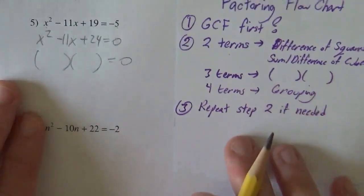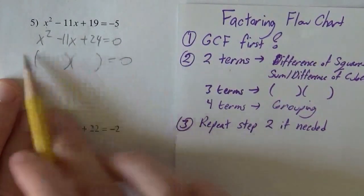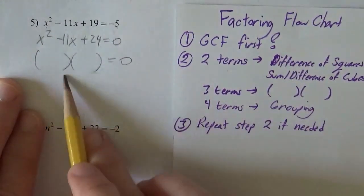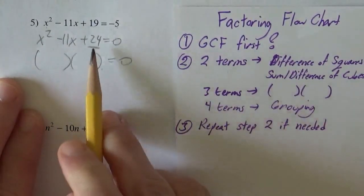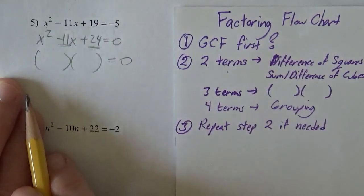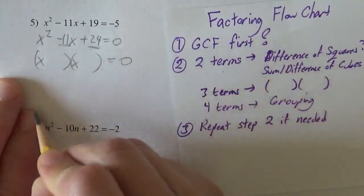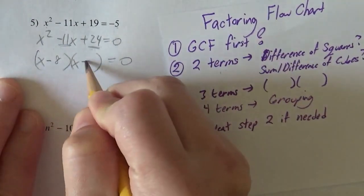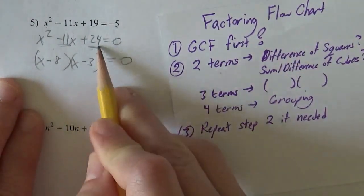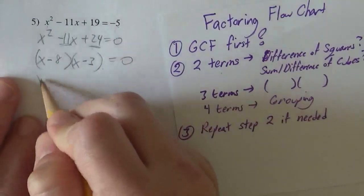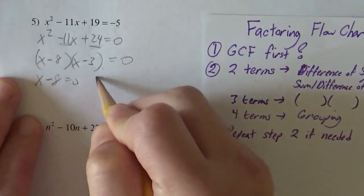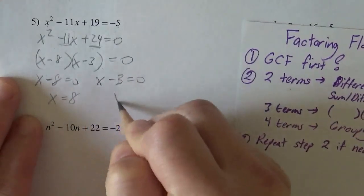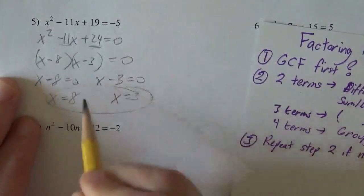For my factoring flow chart, look for GCF first, there is no GCF. I have three terms, so I'm going to look for things that multiply to twenty-four and add to negative eleven. That'll be a negative eight and a negative three. Multiply to twenty-four, add to negative eleven. And so, either x minus eight equals zero, or x minus three should equal zero, so x should equal eight, or x should equal three. Two possibilities.